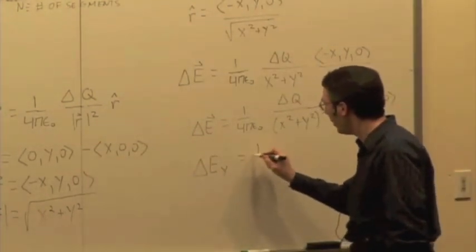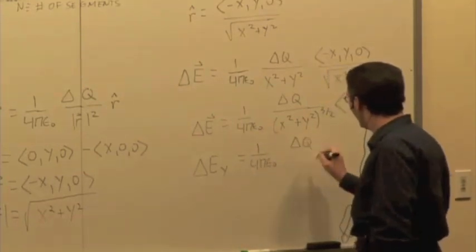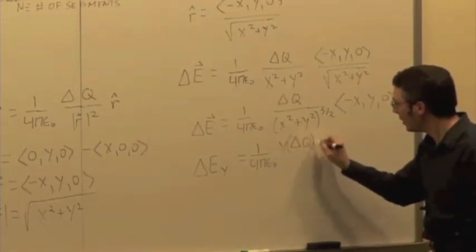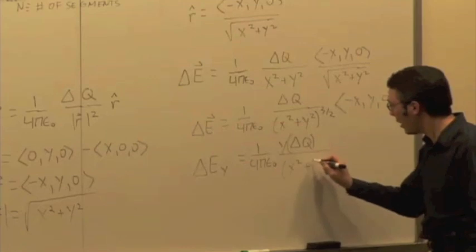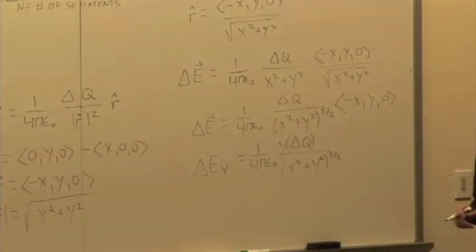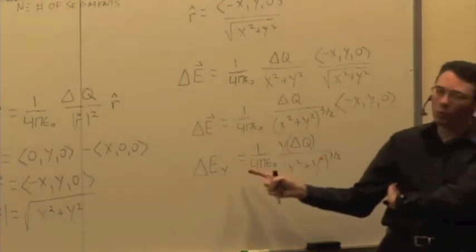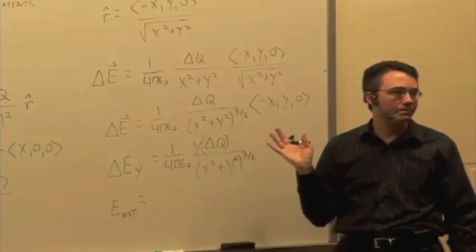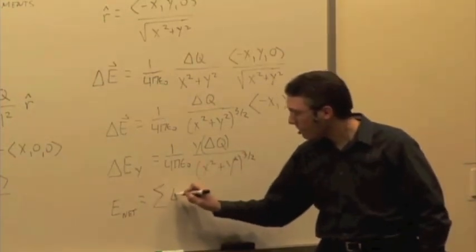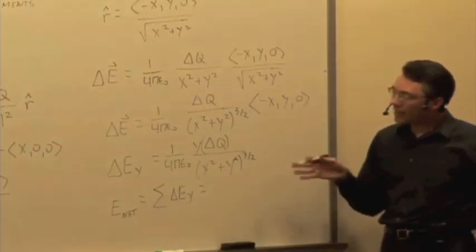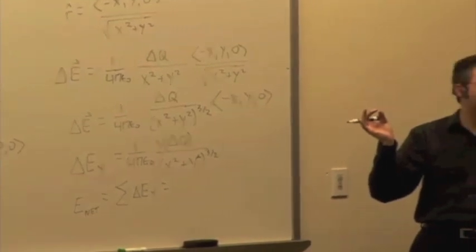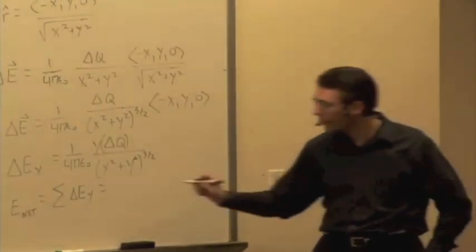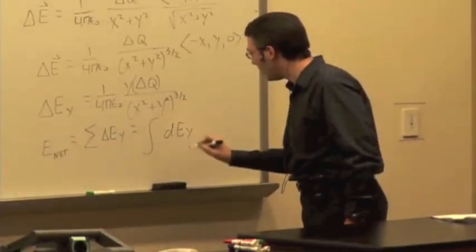So let's just look at the y component. Delta E sub y is going to be one over four pi epsilon zero, times y times delta Q, all over (x squared plus y squared) to the three halves. I have a symbolic expression for the y component of the electric field due to one segment. To find the net electric field, I add up all those segments. If I have lots of tiny segments, in calculus language, this summation becomes an integral — we're integrating dEy.